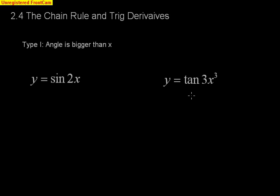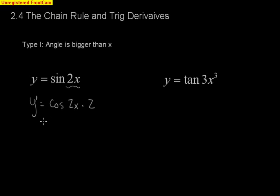So if you notice here right away, we have y equals sine of 2x. What you do is take the derivative of the whole thing, so you're going to have y prime. The derivative of sine is cosine, so I'm going to write down cosine of 2x. Then I just need to multiply by the derivative of the angle, which is 2. So my final derivative, y prime, is 2 cosine 2x.